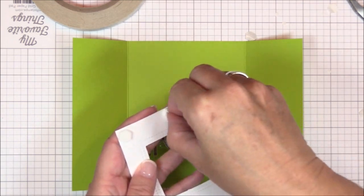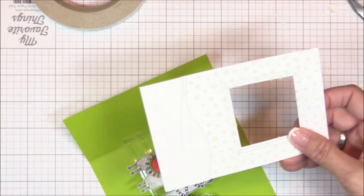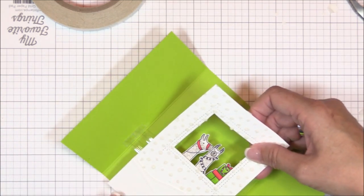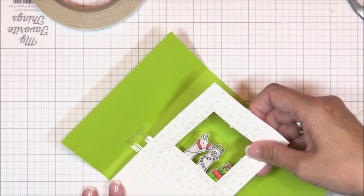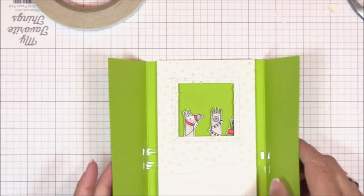Now I can adhere the interior aperture panel to the card base with foam squares. My video shows that I use two layers of foam squares, but I ultimately disassembled it and used only one layer of foam squares in order to cut down on the bulk. And it worked just fine.